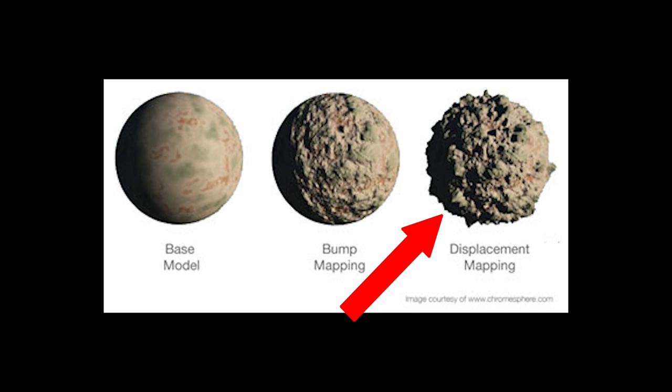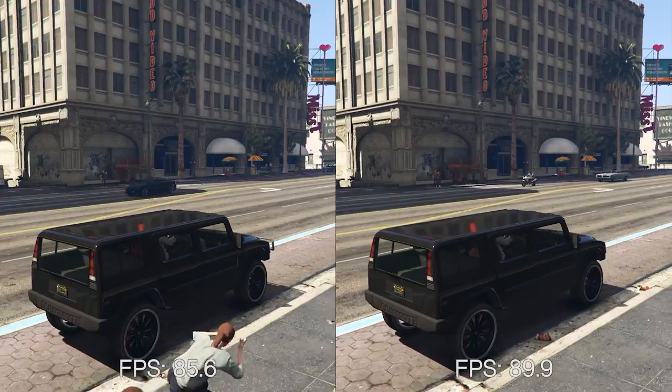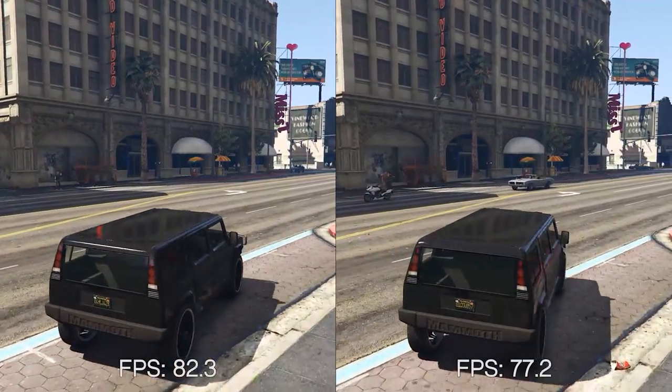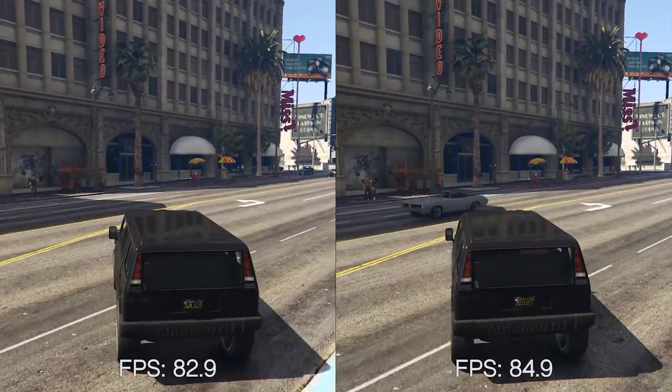The image on the right utilizes displacement mapping, which yields an accurate shape regardless of the viewing angle. Simply put, tessellation without displacement mapping would not change anything about the object, and displacement mapping without tessellation would make the object look extremely blocky. So both are needed to a degree for games to look real.